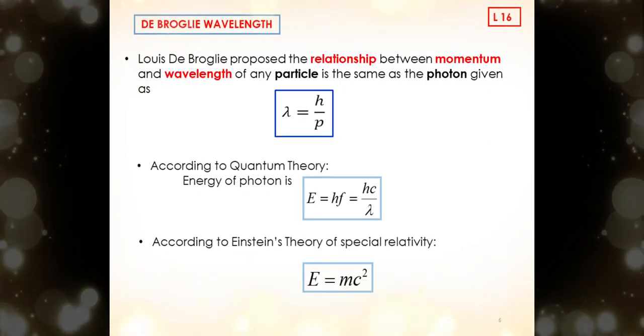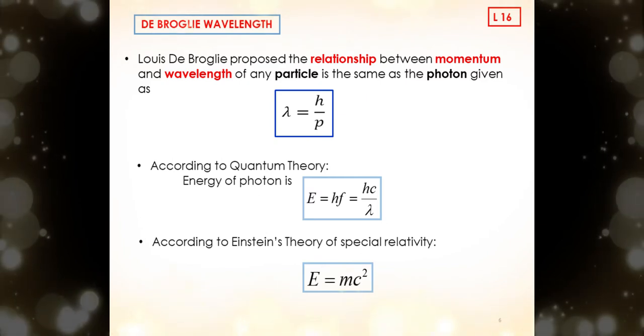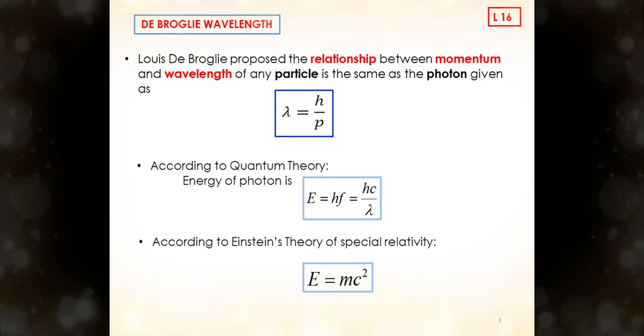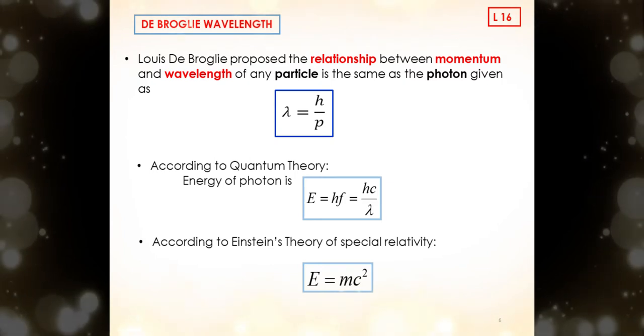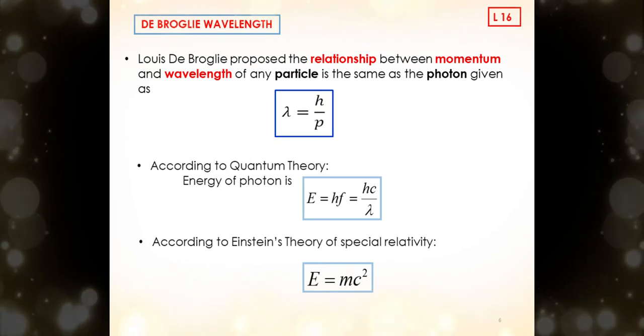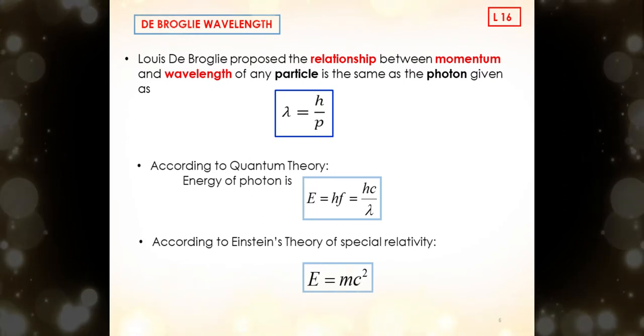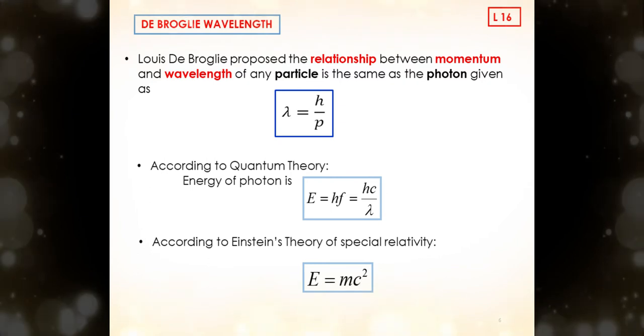Louis de Broglie has proposed that the relationship between momentum and wavelength of any particle is the same as the photon. The de Broglie wavelength is equal to the ratio of Planck's constant h to the momentum. According to quantum theory, energy of photon is E equals Planck's constant h times frequency, equals h c over lambda. According to Einstein's theory of special relativity, we can see that energy equals m times c squared.